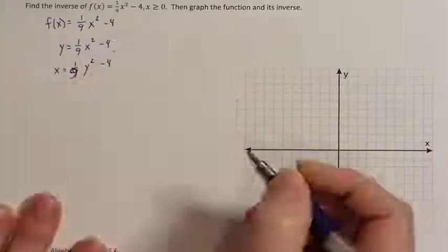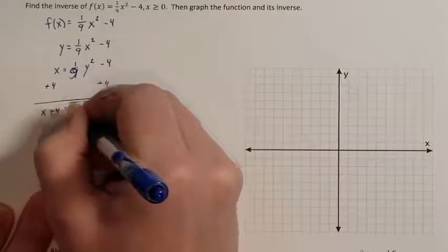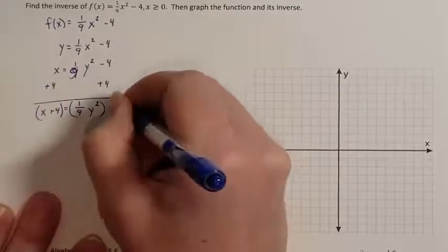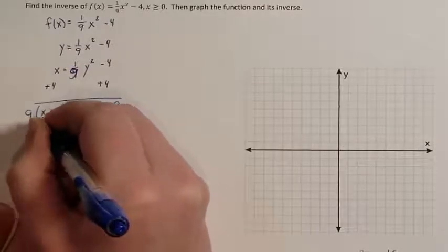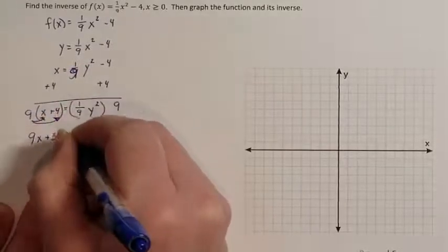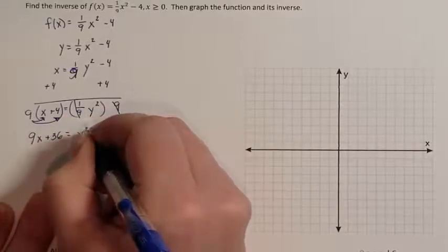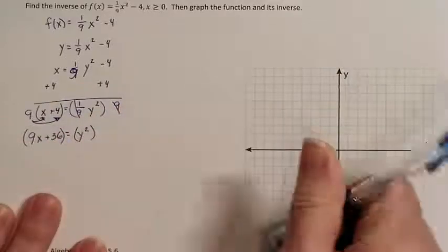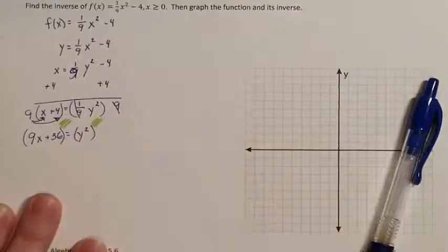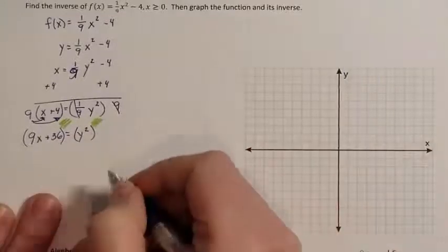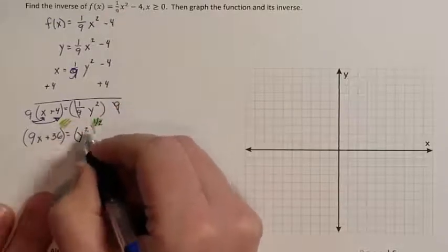So I'm going to add 4 to each side. I'm going to multiply both sides by the 9. So I've got 9x plus 36 because the 9 gets distributed to everybody. 9 times 1 over 9, they cancel each other out. That's just y squared. I need to raise both sides to an exponent. So that exponent would multiply these two and they would cancel each other out.